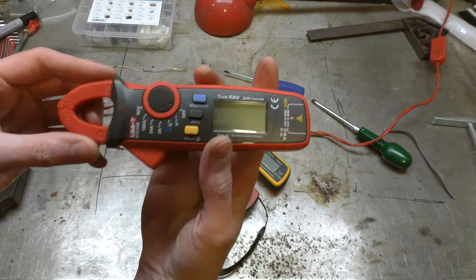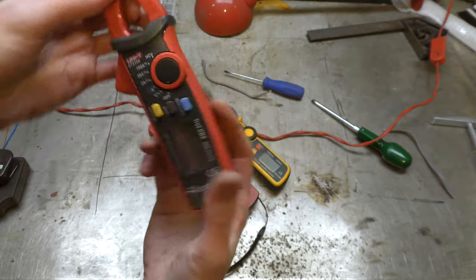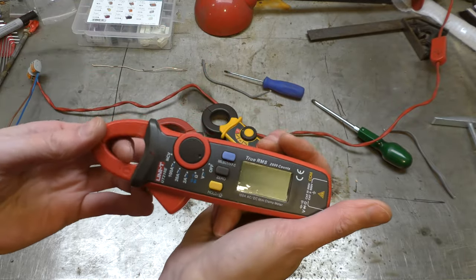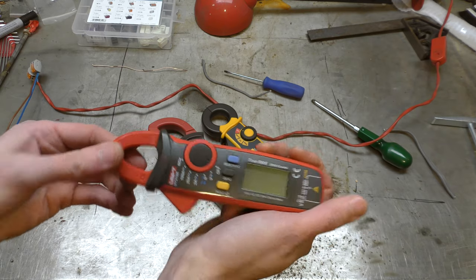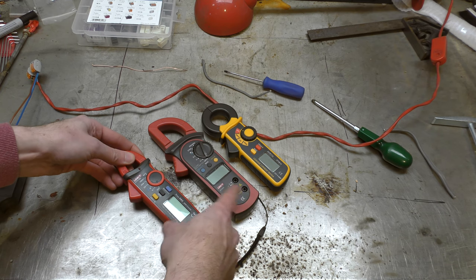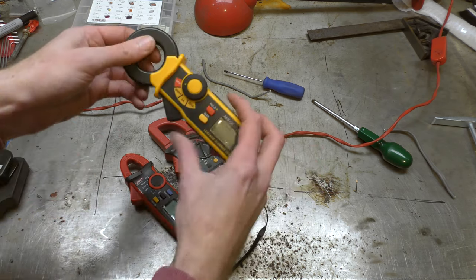And this one, this was an interesting one. This was 30 pounds, and it clamp meters AC and DC loads. So I'm going to do a test to see how accurate the two cheap Uni-T ones are compared to the expensive Amical one is.